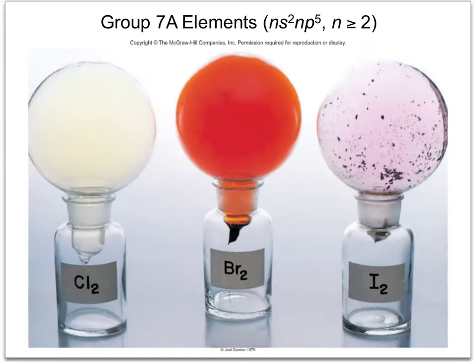Here we see chlorine gas, which has a slight yellowish color. Bromine, which is actually a liquid.